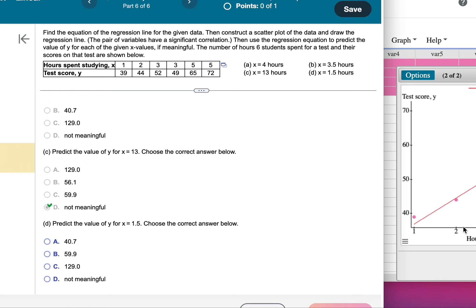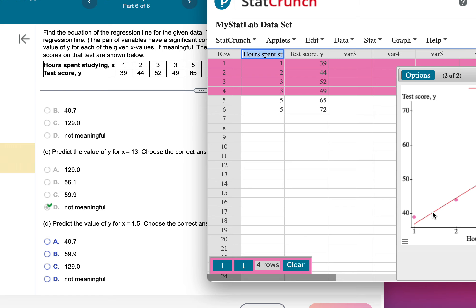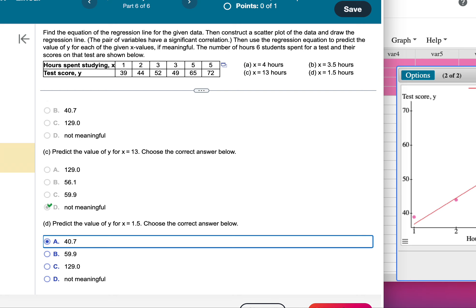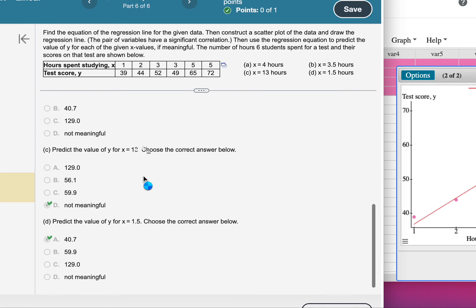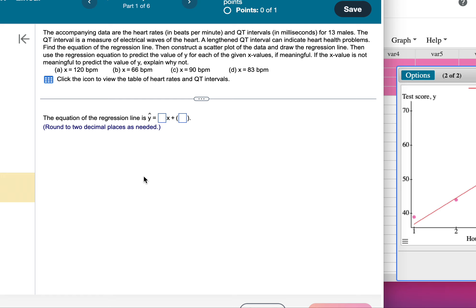And then 1.5, right about here, probably pretty close to 40. Okay, so that's how to do number four on StatCrunch. Okay, hope it helps.